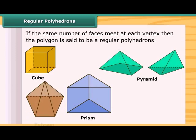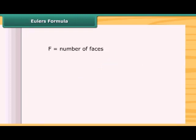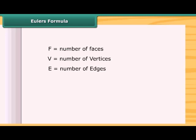If you join all the corners of a polygon to a point not in its plane, you get a model for a pyramid. If F stands for number of faces, V stands for number of vertices, and E stands for number of edges, then Euler's formula is: F + V = E + 2, that is, F + V − E = 2.